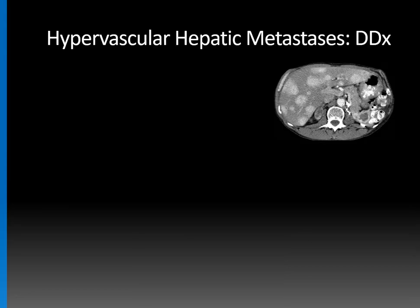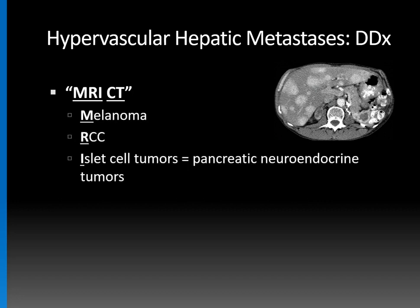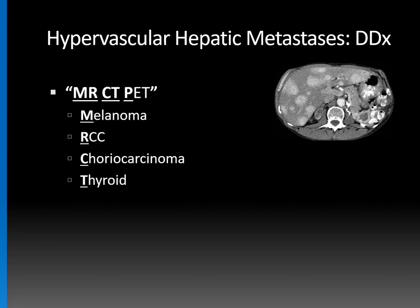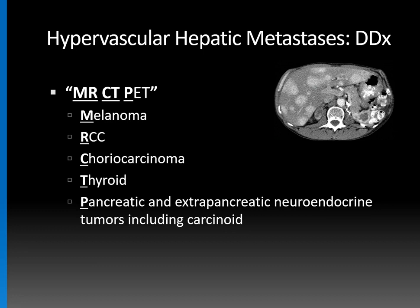What else can cause hypervascular hepatic metastases? There's a handy mnemonic: MRICT. M is melanoma, R is renal cell carcinoma, I is islet cell tumors such as pancreatic neuroendocrine tumors, C is carcinoid and choriocarcinoma, and T is thyroid. If you prefer a nuclear medicine version, use MRCT PET, where P covers pancreatic and extrapancreatic neuroendocrine tumors including carcinoid. The most common hypervascular hepatic metastases you'll see are typically melanoma, renal cell, and carcinoid. For hypovascular liver metastases, it's typically GI tract, pancreas, and sometimes lung.